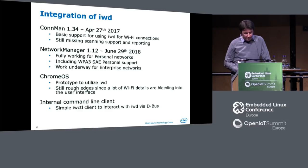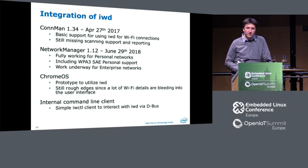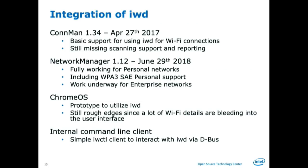We have a prototype for Chrome OS — that will work as well, but it's rough and not published yet. Chrome OS has the really nasty thing that a lot of Wi-Fi details leak into the Chrome browser, so there's a lot of redesigning and restructuring needed to push things back down where they're supposed to be. We have a version for Intel's Clear Linux with Network Manager and IWD, which works really well. The internal command line client iwctl is also really nice to use for connections.